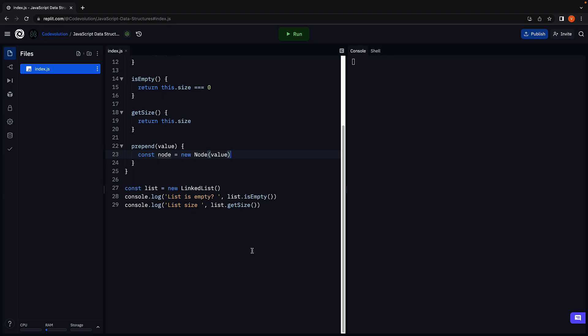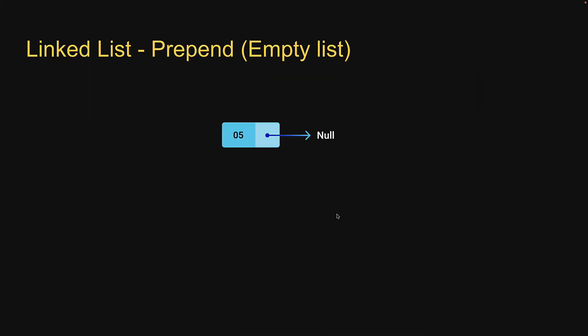Now that we have a node that we can prepend, we have to address two scenarios. For step 2, we are going to handle the scenario where the list might be empty to begin with. If a list is empty, we have to make the head point at the newly created node. Remember, the head pointer should always point at the first node in the list. By pointing head at the newly created node, we have effectively prepended our node to an empty list.